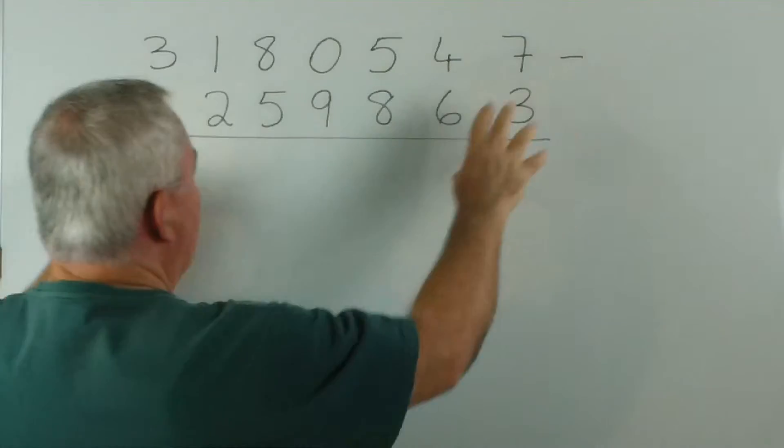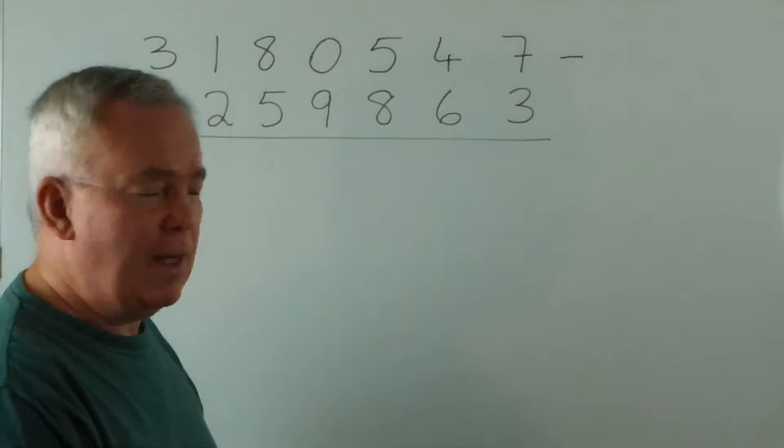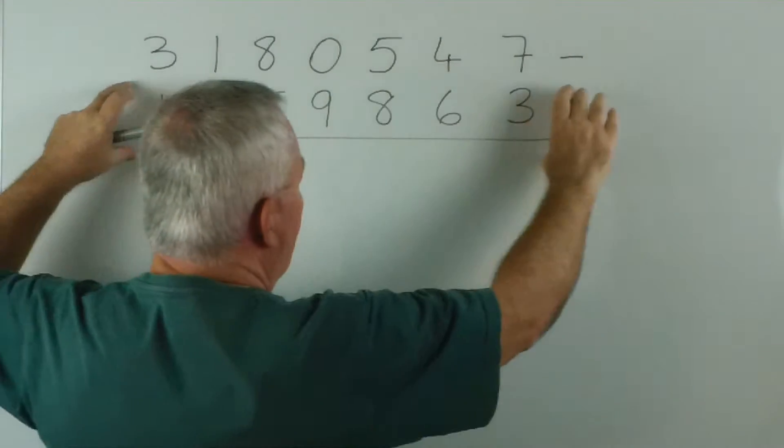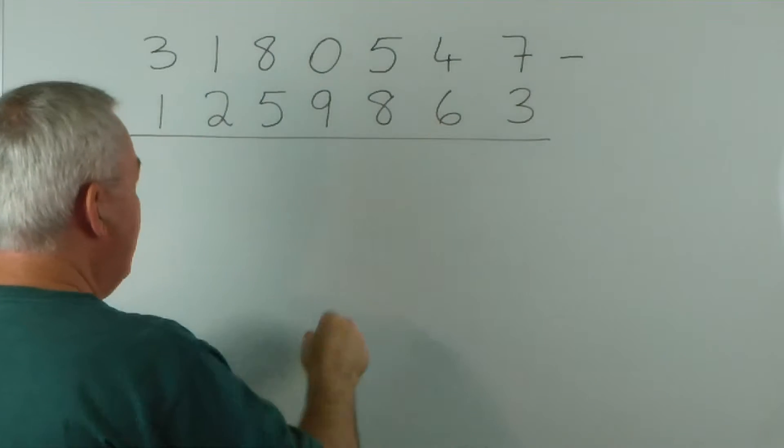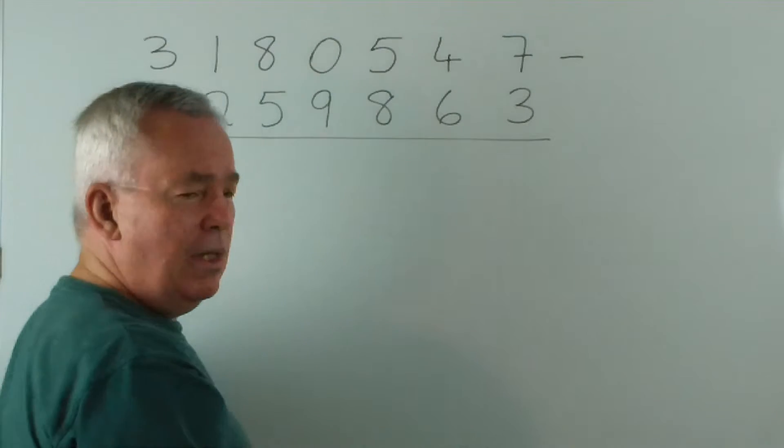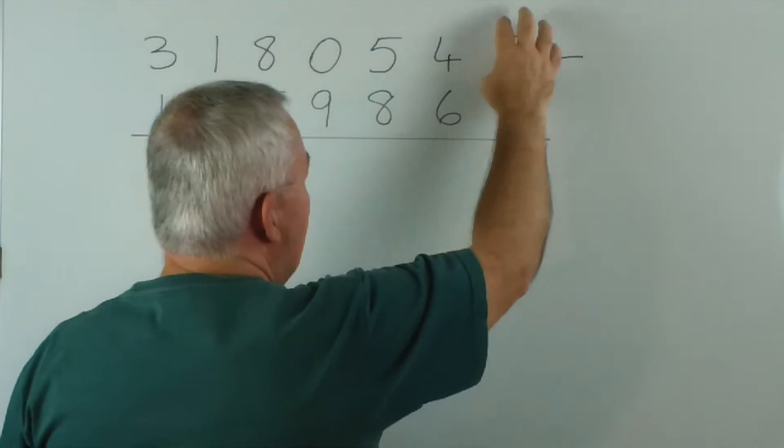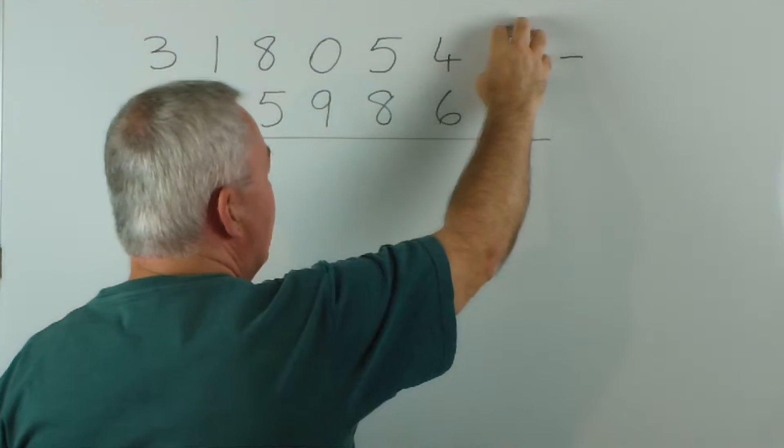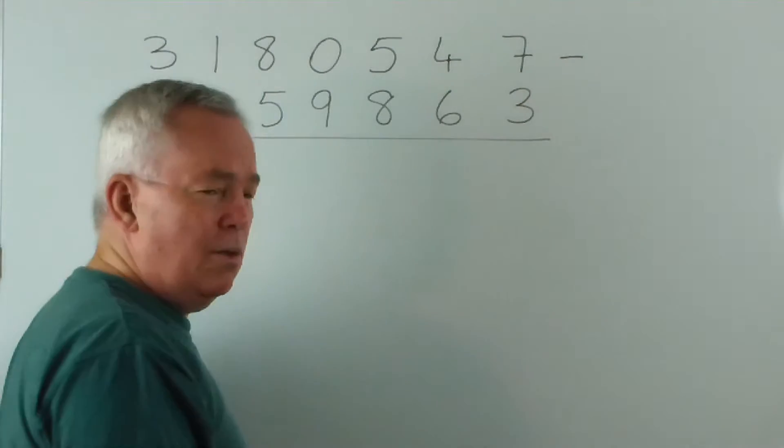And what it means is that when we're subtracting large numbers, or small ones for that matter, we do not alter the bottom number at all, but we recognize that every column is ten times bigger than the preceding one. And if we need this number to increase, for example, then we borrow from the next column up.